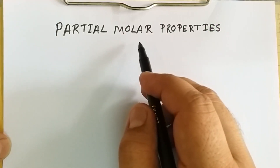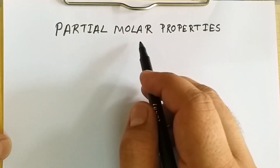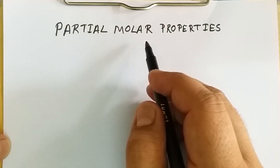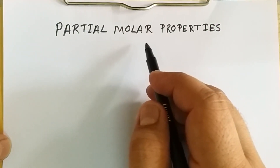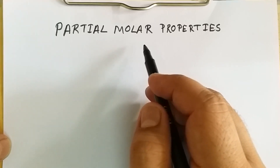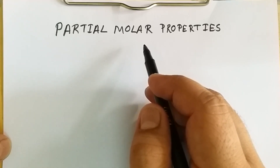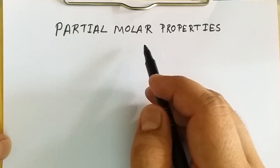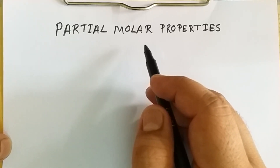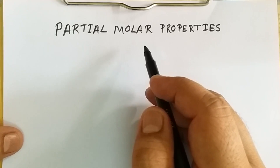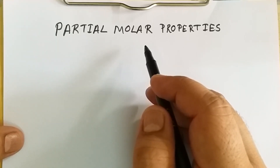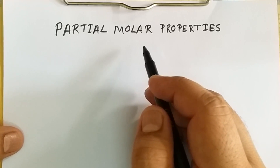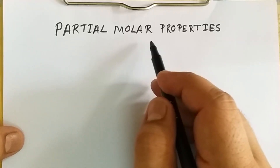Welcome. Today we are going to discuss partial molar properties, also known as partial molar quantities. One important point before starting: partial molar quantities are always considered when we are dealing with binary, ternary, or in general mixtures of non-ideal systems. When we are considering ideal systems, there will always be molar properties and not partial molar properties.